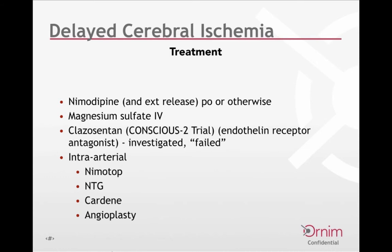Clazosentan in the CONSCIOUS-2 trial was looked at — this is an endothelin receptor antagonist. Unfortunately the trial was considered failed because the endpoints weren't met, although there was a trend towards improvement in the treatment group versus placebo. From an intra-arterial standpoint, nimodipine, nitroglycerin, cardizem, and cardene are all vasoactive agents that have been looked at, as has papaverine. Angioplasty is also considered a viable option in patients where recalcitrant vasospasm is leading to downstream ischemia and infarction.